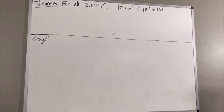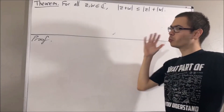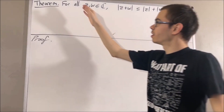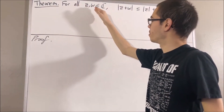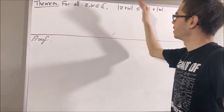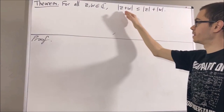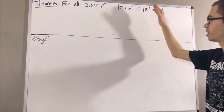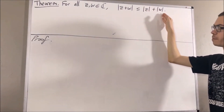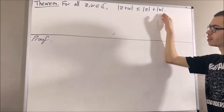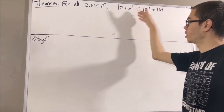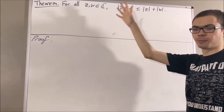In this video, we are going to prove the following theorem: for every two complex numbers z and w, the absolute value of z plus w is less than or equal to the absolute value of z plus the absolute value of w. Certainly, we're trying to prove the triangle inequality for complex numbers.